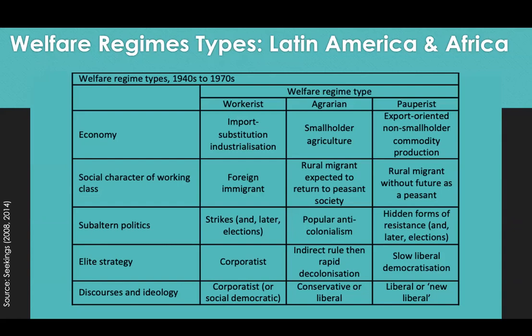There are two significant efforts at identifying welfare or social policy regime types in Africa worth discussing. One is by Jeremy Sikins and the other by Thandika Mkandawire. Sikins' classification focuses on Latin America and Africa, while Mkandawire's focuses on Africa. Sikins derived three welfare regimes: workerist, agrarian, and pauperist, based on five criteria: the nature of the economy, the social character of the working class, the nature of subaltern politics, the strategy adopted by the elite, and the discourses and ideology underpinning attitudes towards social welfare.